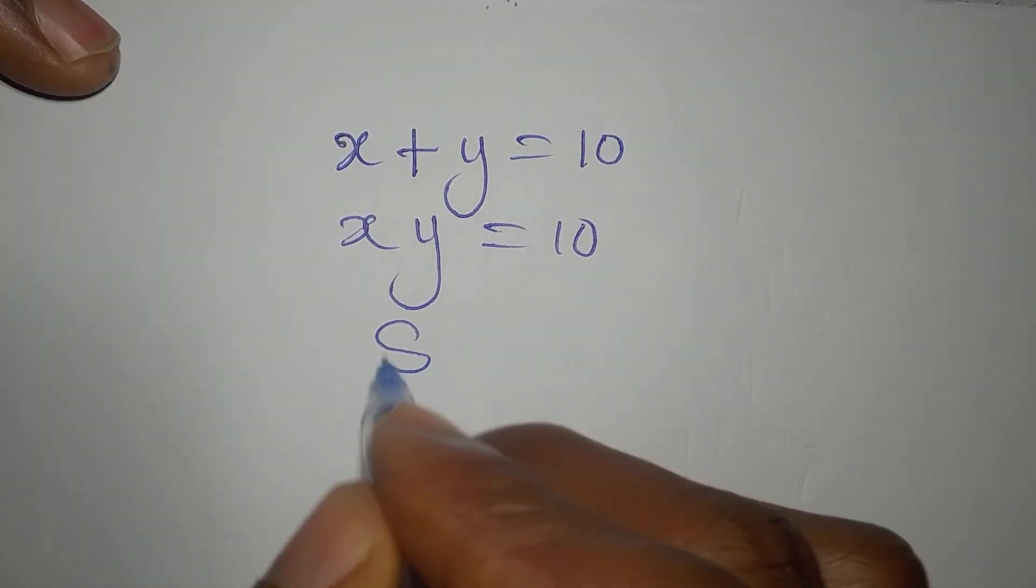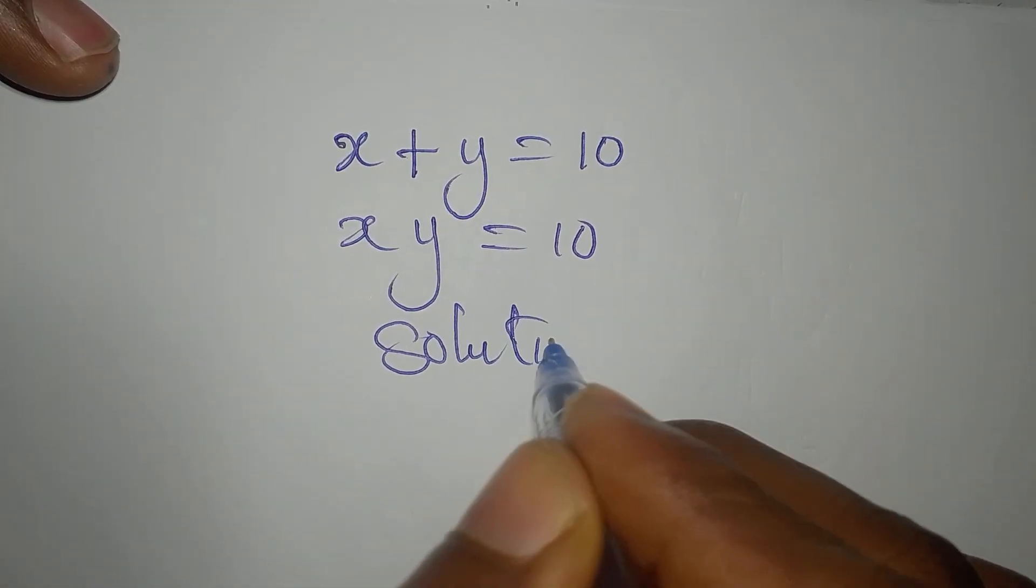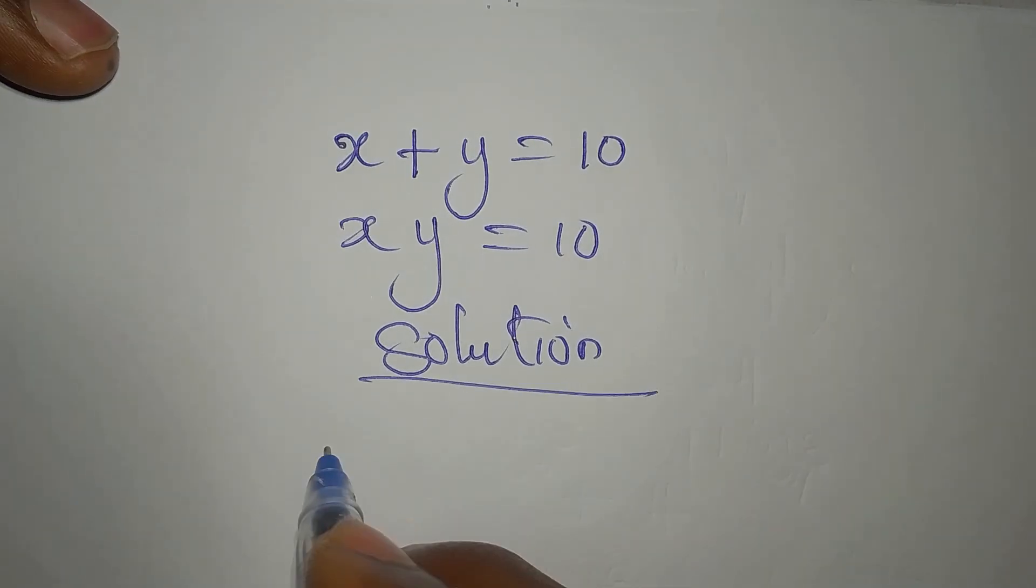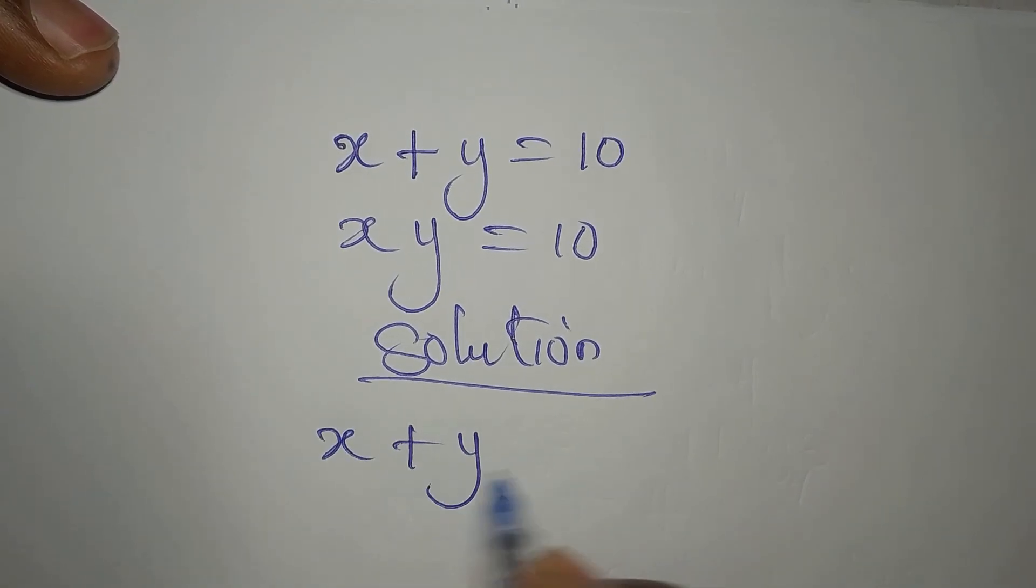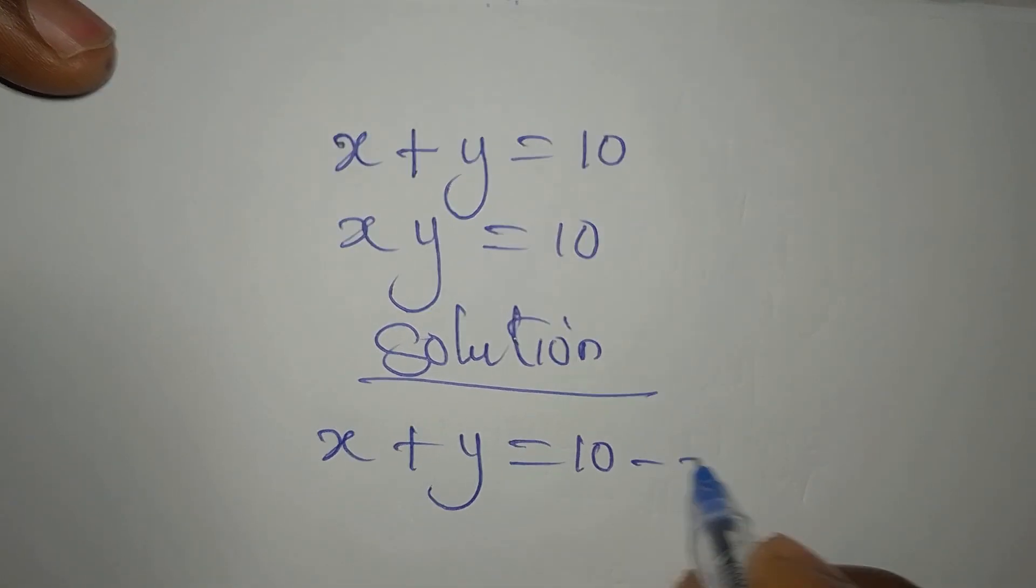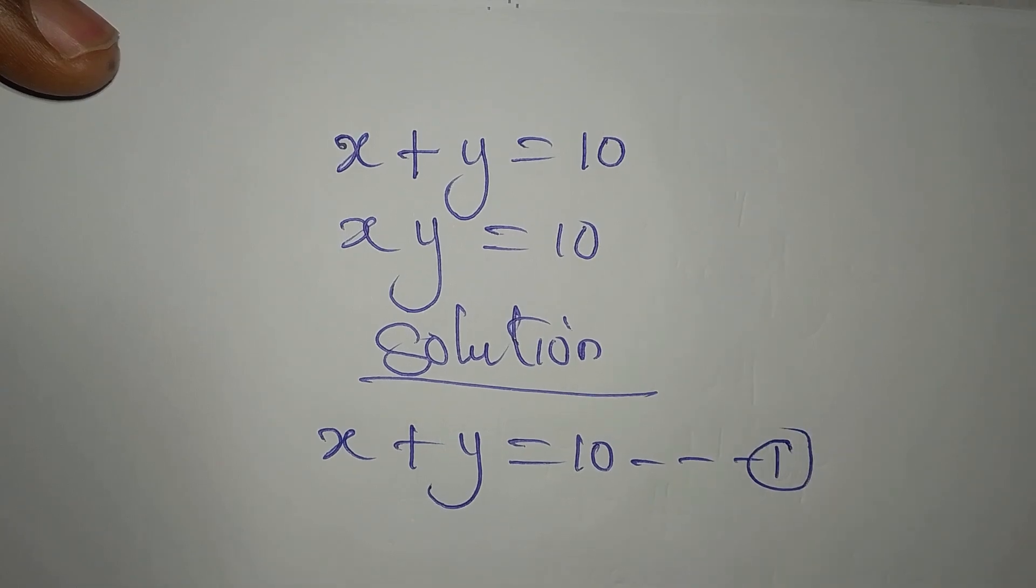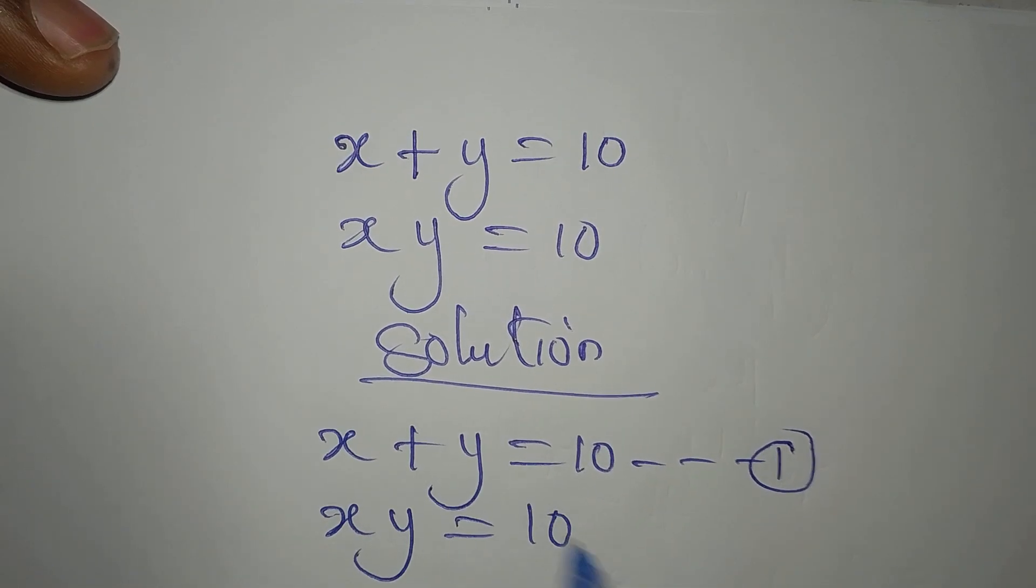Hi everyone. Let's solve this problem simultaneously. X plus Y equals 10. This is our equation 1. Then XY also equals 10. It's our equation 2.